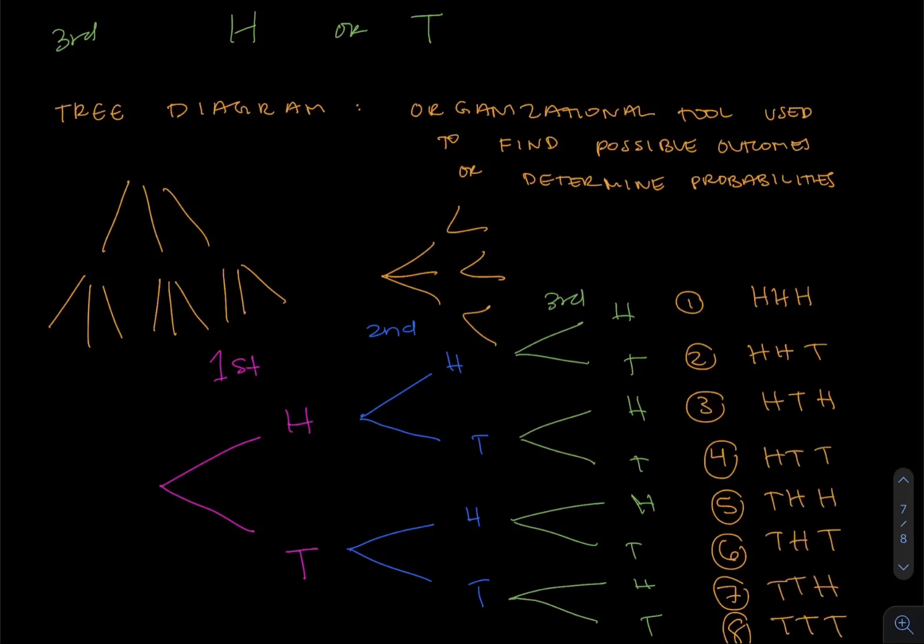So how do we feel with the tree diagram? I hope that looking at this, things feel a little bit clearer. We still get our eight possible outcomes for this example, but it can get a little crowded. And if you have more elements, it's going to be a lot more drawings.